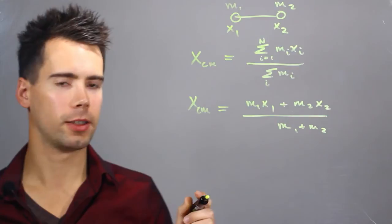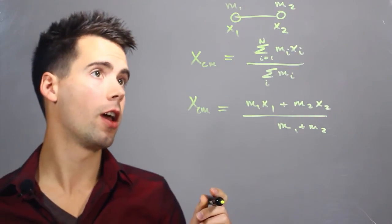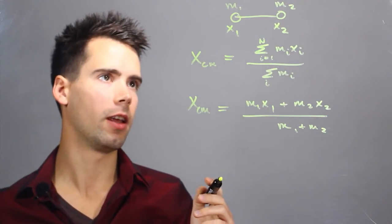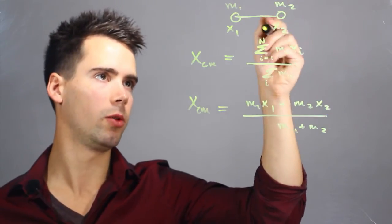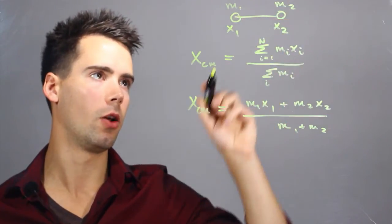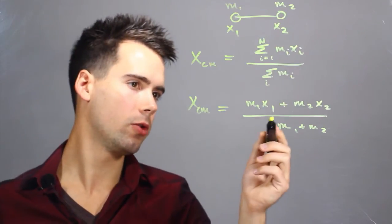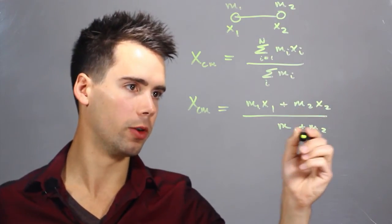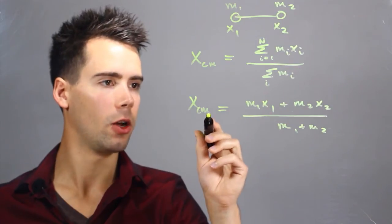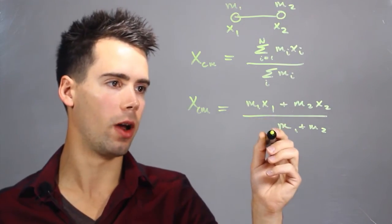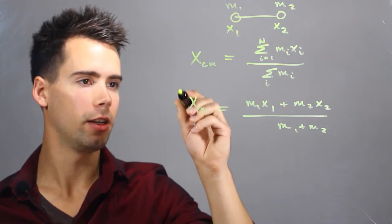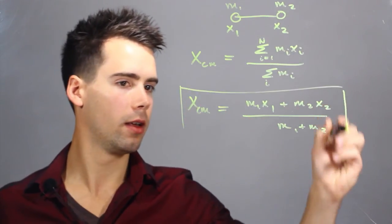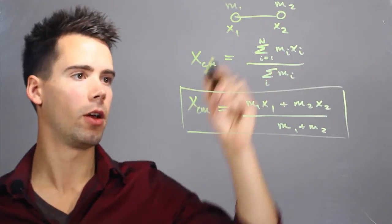Now this equation looks slightly foreign possibly. In order to test its validity, think about just one particle being here. If we set m2 equal to zero, it's kind of like m1 is existing only by itself. So if we do set m2 to zero, this term would go to zero, this one would go to zero, and we find the x center of mass is m1 x1 over m1, which simply reduces to x1. So we know this equation is valid for this two particle system above.